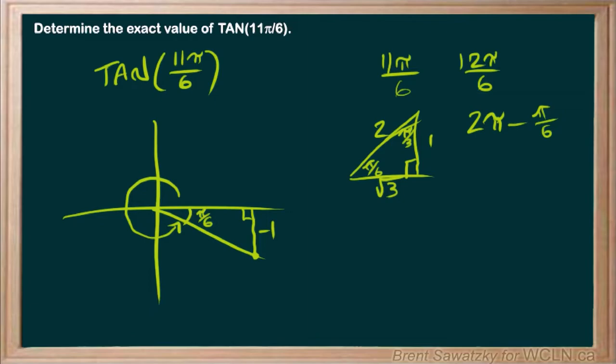We would also take a look at that and recognize that we would have our root 3 there, and of course, the hypotenuse as a 2 there.